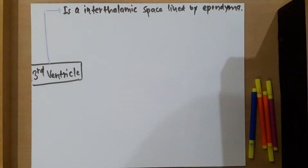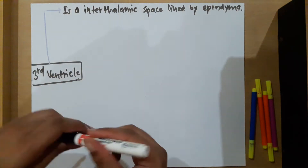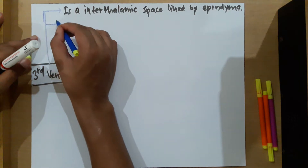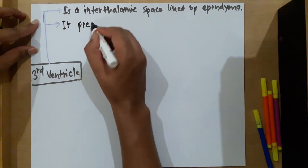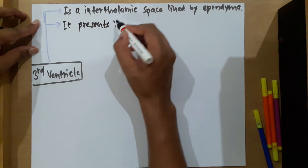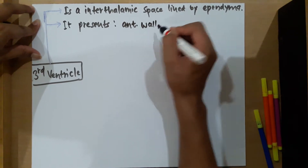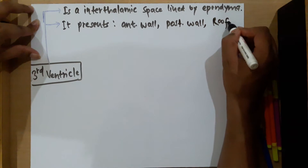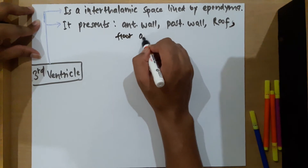We discussed some boundaries earlier but didn't mention how many boundaries it presents. It presents an anterior wall, posterior wall, roof, floor, and lateral walls.